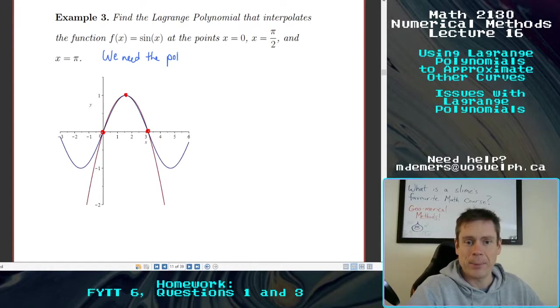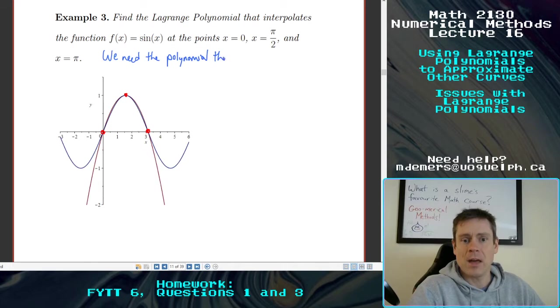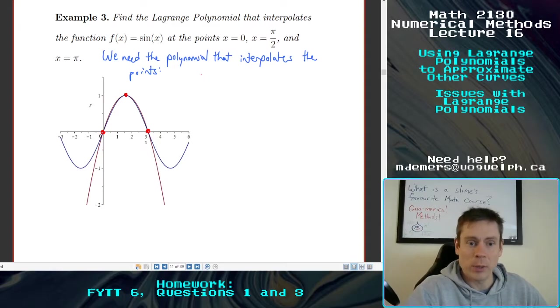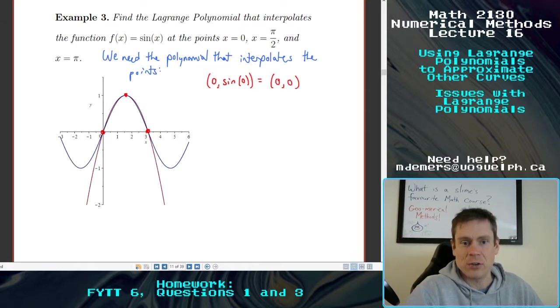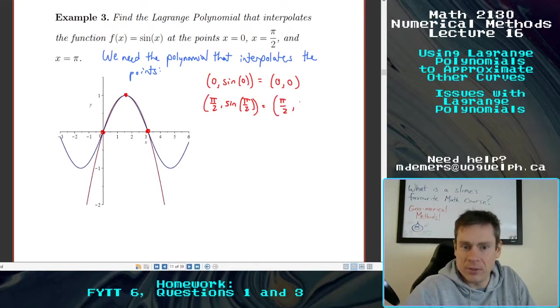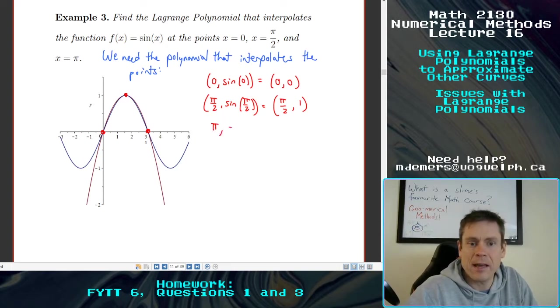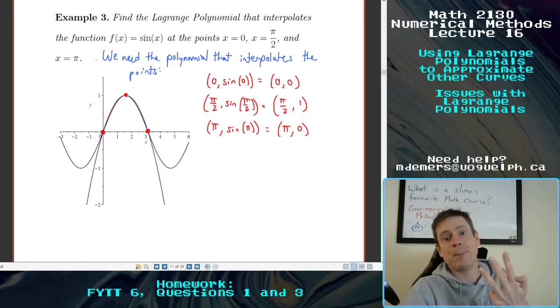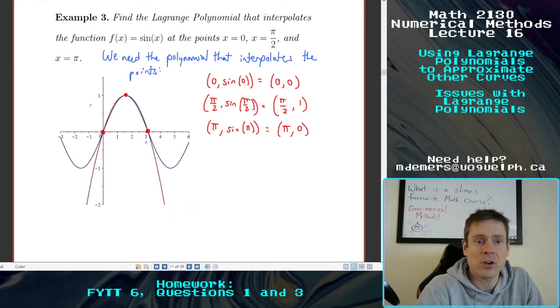We need the polynomial that interpolates the points. Let's find them. I used some pretty nice numbers here. We would like zero and zero, that's zero and sin(0). I'm just getting the y values from plugging into that function. I need pi over two and sin(pi over two), so that's pi over two and one. And then finally, pi and sin(pi), which would be pi and zero. So I need these three points. I'm going to have to have three different basis functions, and each one of those will be quadratic.